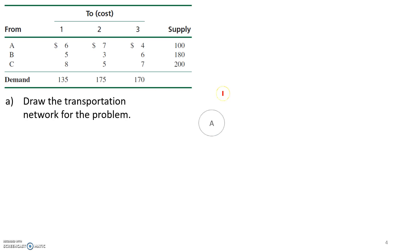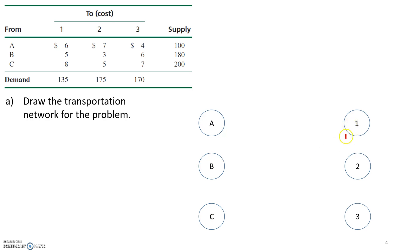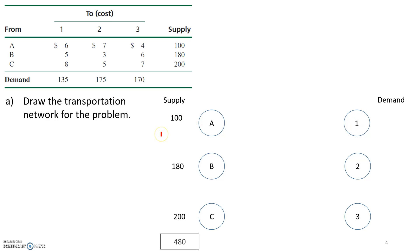We start by drawing a node for our three sources — A, B, and C — and a node for our three destinations — 1, 2, and 3. We write supply on one side and demand on the other. A supplies 100 units, B 180 units, and C 200 units, giving us a total supply of 480 units.